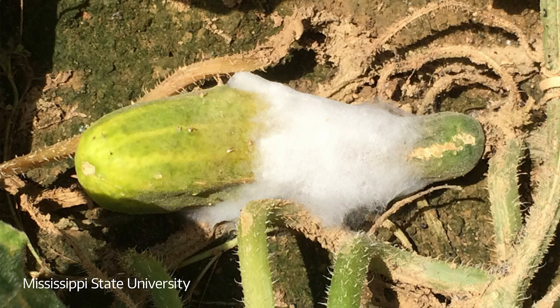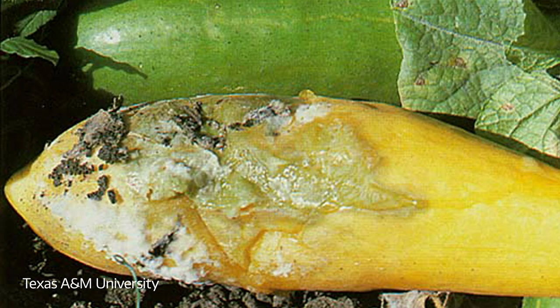Pythium rot turns the whole fruit into mush, and you can see the white growths on it — the same excess water situation. Fungicides can work on these, but for food crops we prefer environmental management: reducing water on the fruits and improving air ventilation rather than applying fungicides.